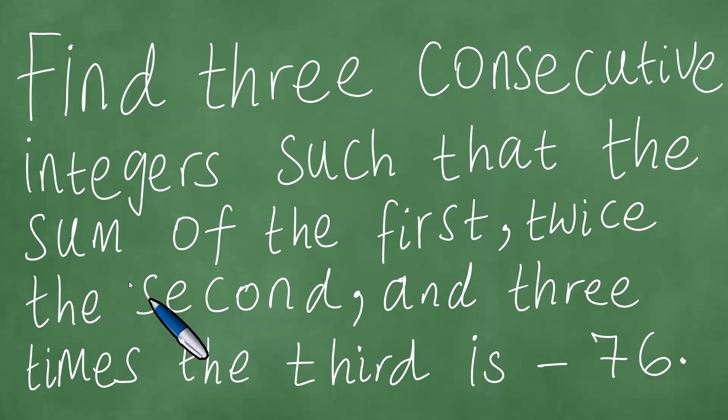We are looking at this word problem in front of us, focusing on solving a problem about consecutive integers. We are told through this problem that we need to find three consecutive integers such that the sum of the first, twice the second, and three times the third is minus 76.